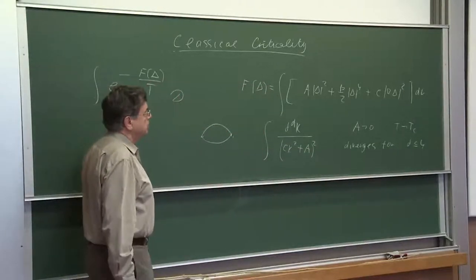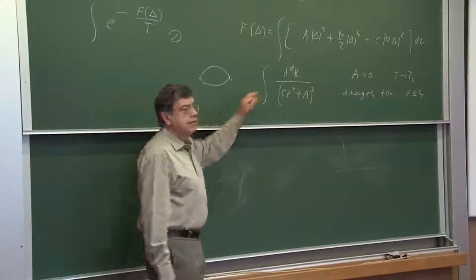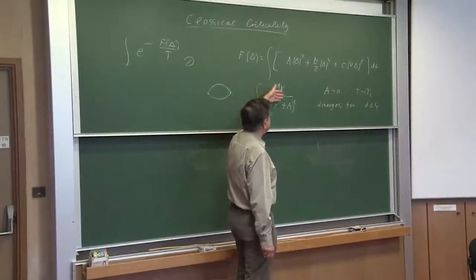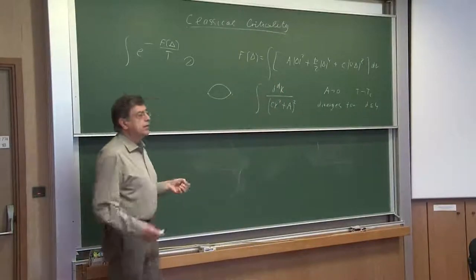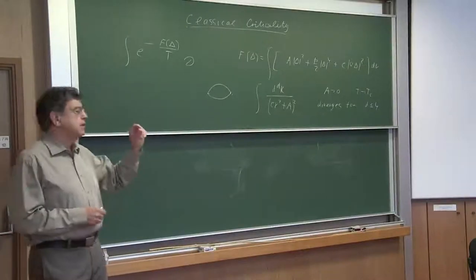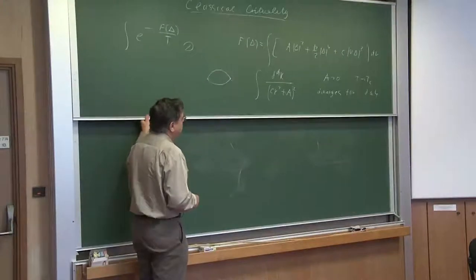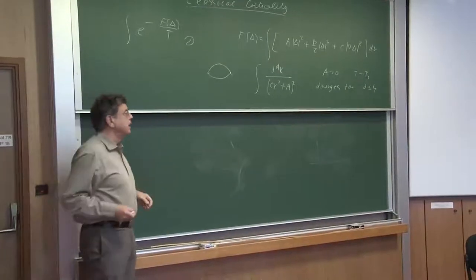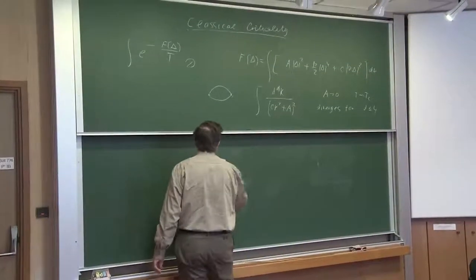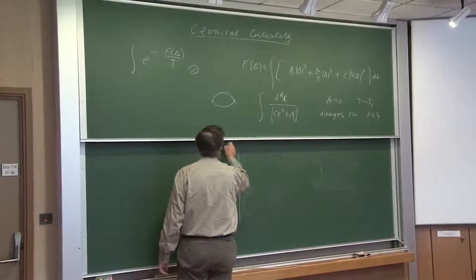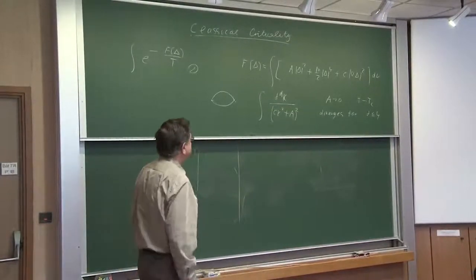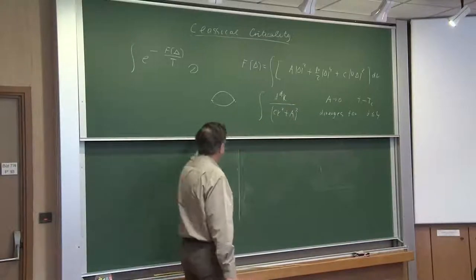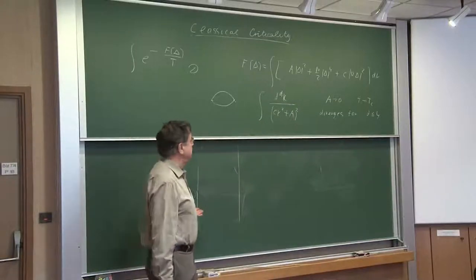Now a very important question: what is the dimensionality? How does one determine the dimension of the system? Usually one assumes that if it is a chain, it is one dimension; if it is an ideal thin film, it is two dimensions. But actually everything depends not on the number of atoms in transverse directions but on the geometry. If one takes a very thick but long sample, then close to the transition one can find a region where the system is effectively one-dimensional.